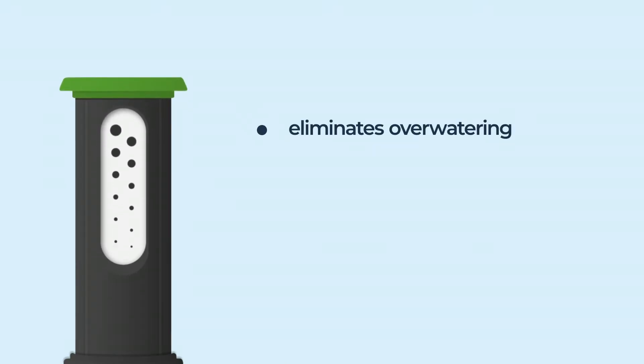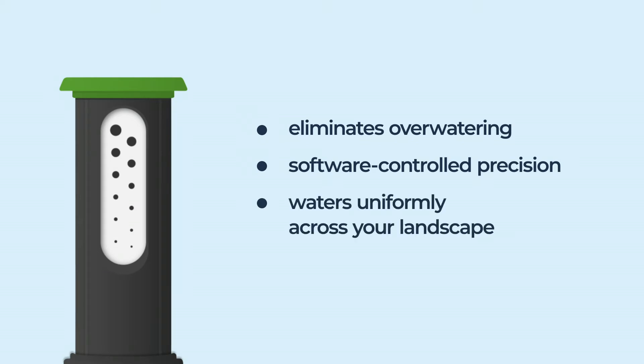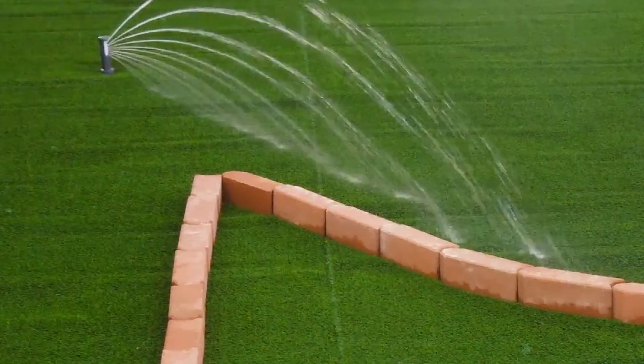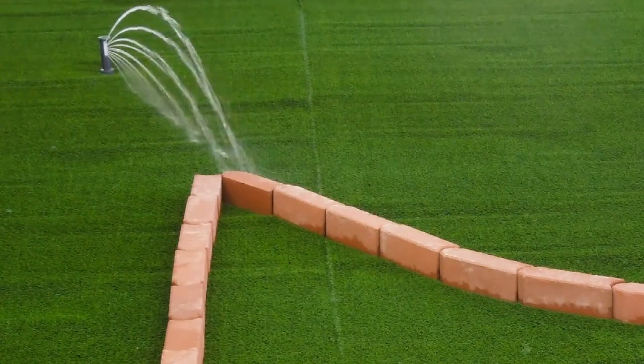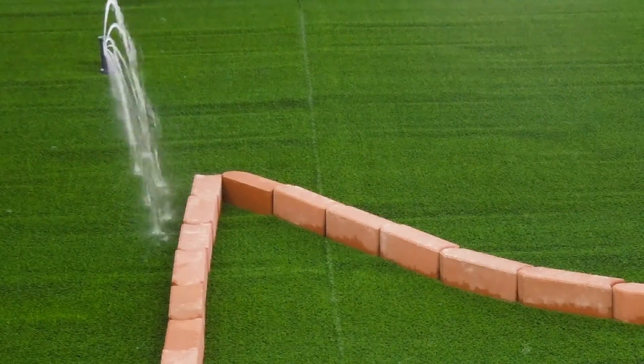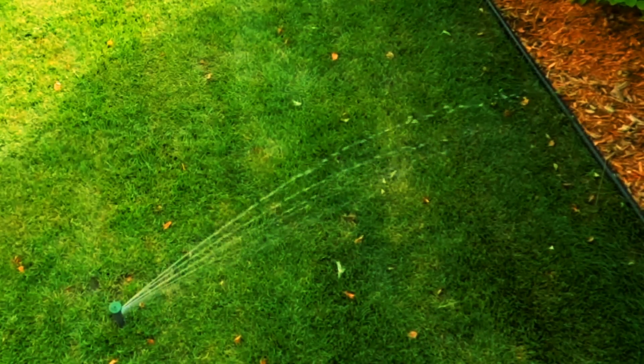Irigreen eliminates overwatering by using software-controlled, multi-stream nozzles to deliver water uniformly across your landscape. Irigreen's digital sprinklers irrigate to the exact shape and contour of your lawn, eliminating overlap and maximizing water efficiency.